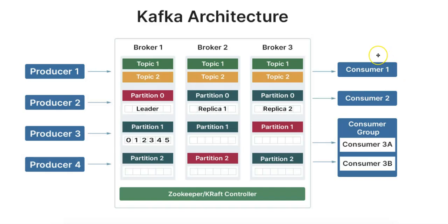On the other side, we have consumers. Consumers are the clients that read messages from the Kafka topics. Consumers pull data from Kafka, meaning they control the rate of data consumption. Consumers typically belong to a consumer group, and Kafka ensures that each partition of a topic is consumed by only one consumer within a group, providing parallel processing.